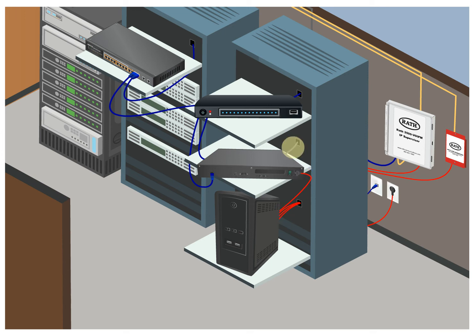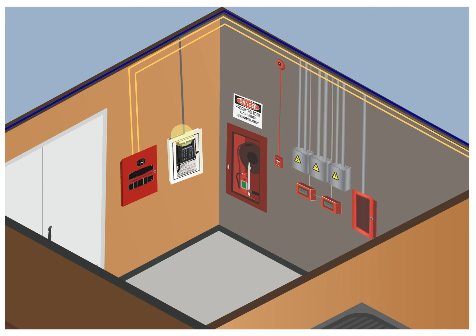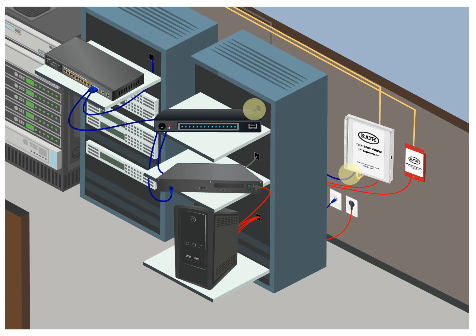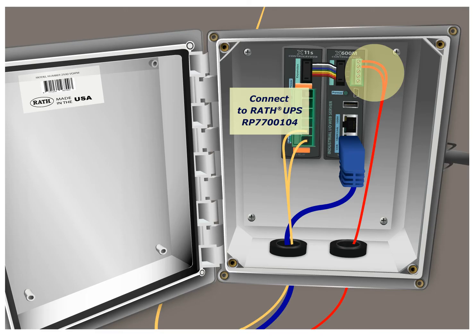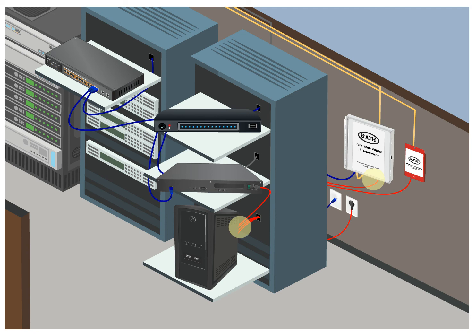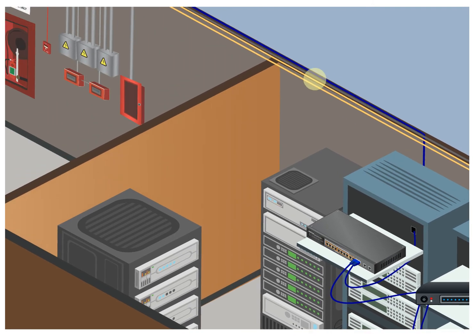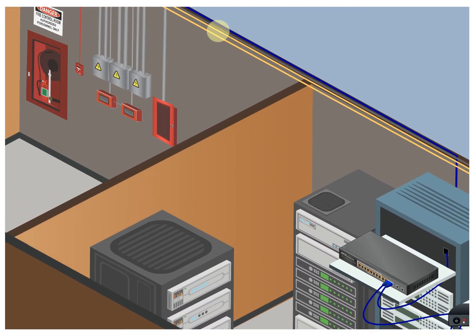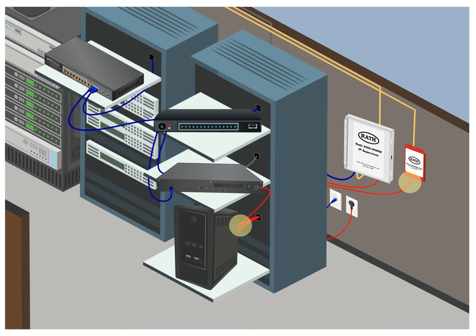Plug the power connection of the distribution module into the RP-7700104. Run a single twisted shielded pair from the distribution module to the command center. If there are multiple lobby stations, run an additional pair to each lobby unit from the distribution module. Connect the 2500 VOIPM to the building router via an Ethernet cable. The 2500 VOIPM pings all of the system devices on the network to ensure functioning communication pathways. Plug the power connection of the 2500 VOIPM into the RP-7700104. Run the relay contact of the 2500 VOIPM to the fire alarm panel. Run the relay contact of the UPS monitor to the fire alarm panel, and plug the power connection of the UPS monitor into the RP-7700104.